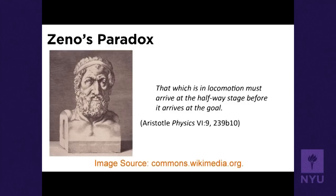So let's move from Yoda to Zeno — Zeno of Elia — who proposed this famous paradox, which is written down in Aristotle's Physics. It says: that which is in locomotion must arrive at the halfway stage before it reaches its goal.